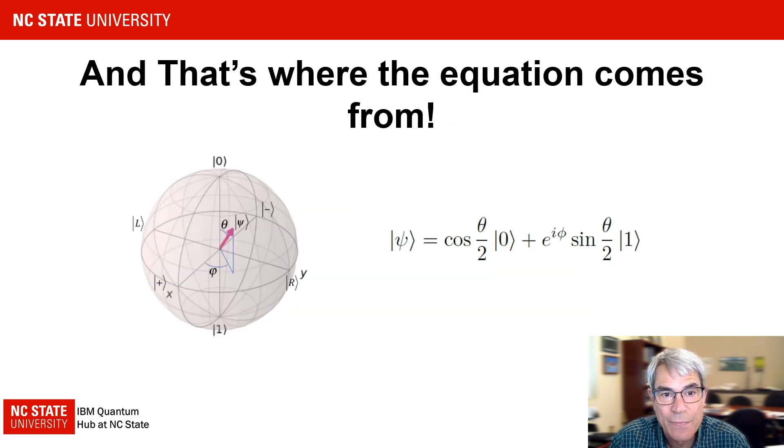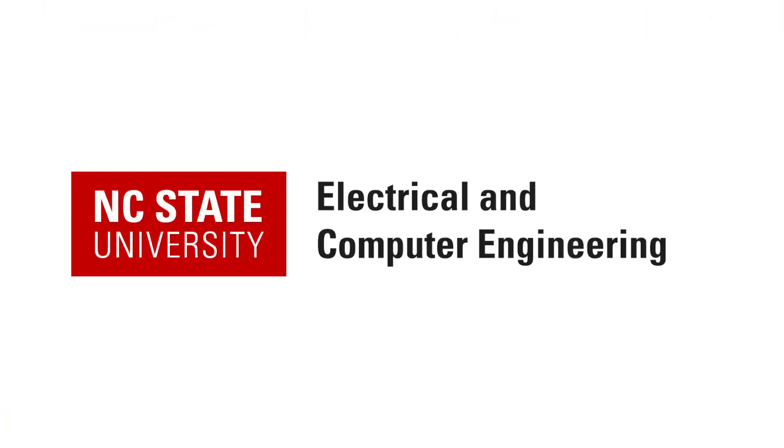And that's where the equation comes from. When you take the expectation value, you end up with products of cosine theta by 2 and sine theta by 2, which when you apply a trig identity reduces to the sine theta factor that you need for the classical rotation. Thank you very much.